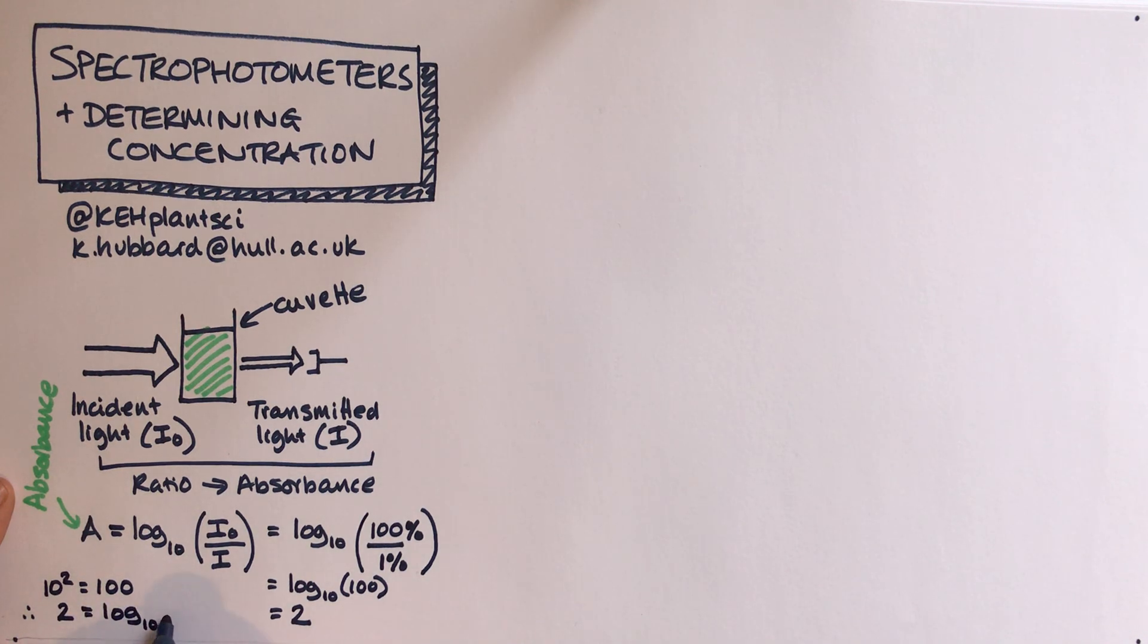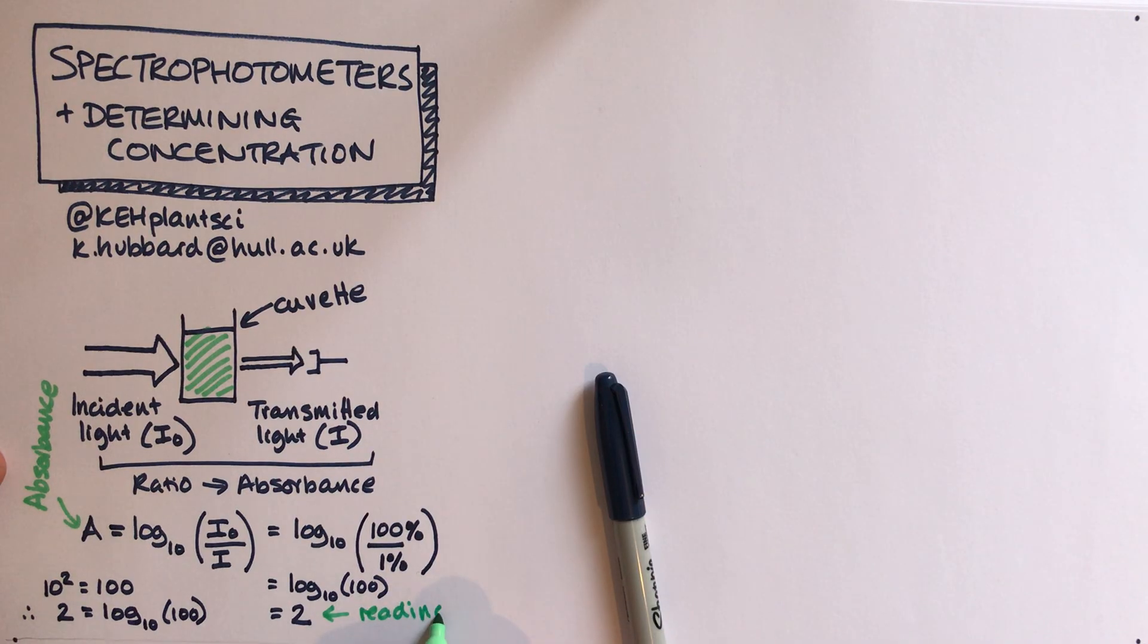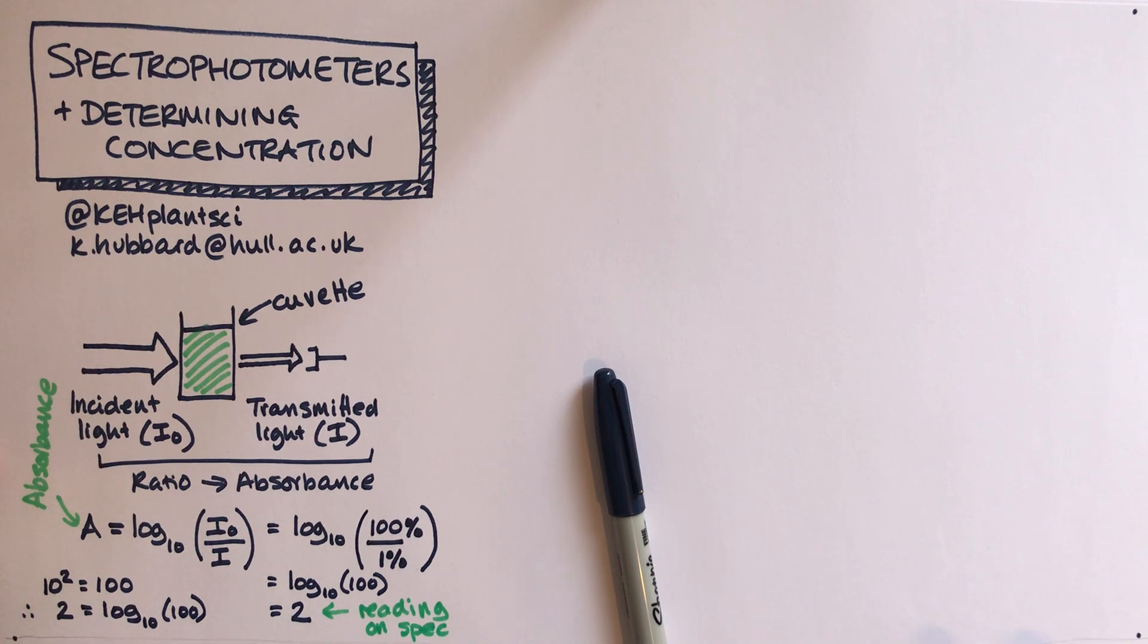Log to the base 10 of 100 is 2. Log to base 10 is kind of the opposite of having the power on the exponential. That reading on the machine is what you get. That number is the number that you would get on the spectrophotometer. It does all of that maths for you, so you don't need to worry about that maths, but that's just to show you where it comes from.